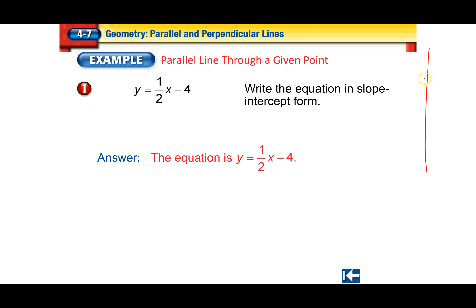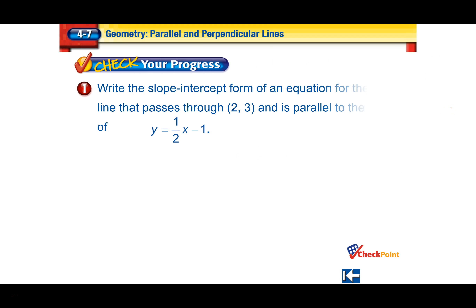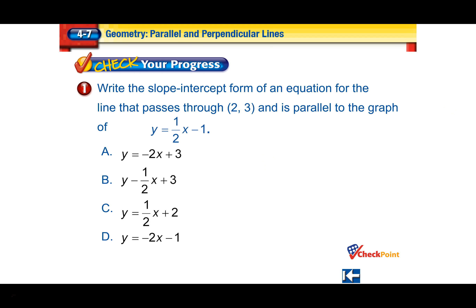So technically we have a line that starts at negative 7 and goes up 2 over 1, and the new parallel line passes through negative 4 going the same way. Pause this and give it a shot.